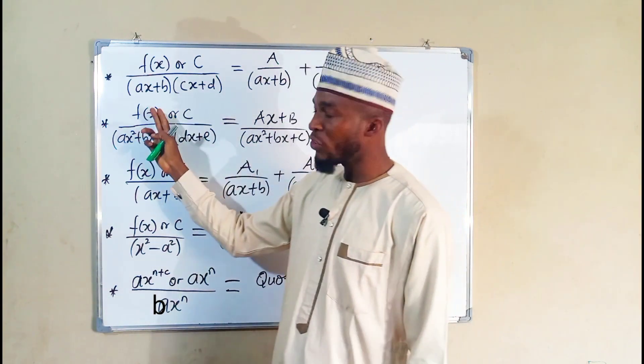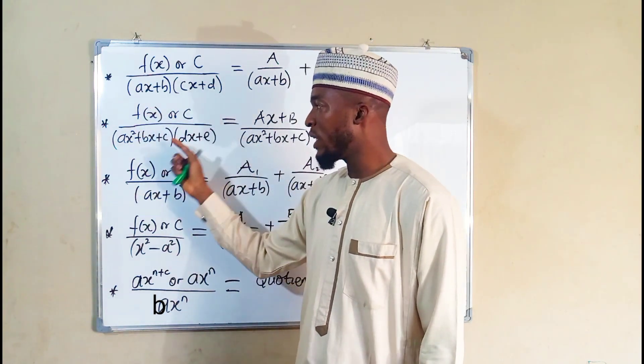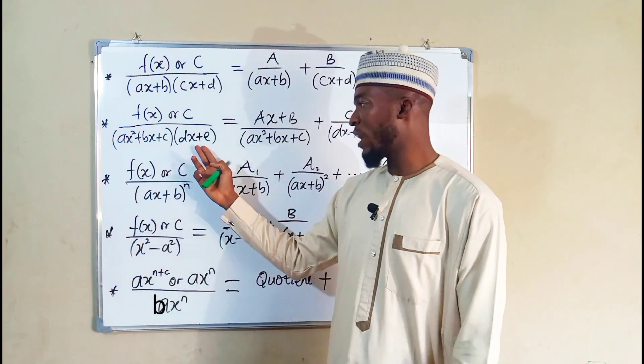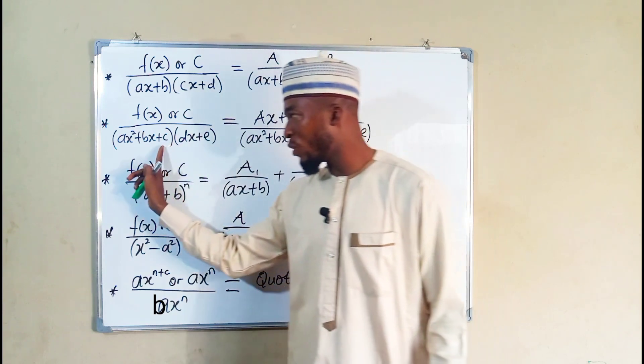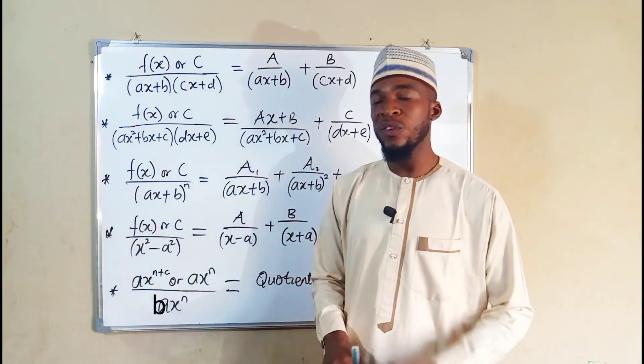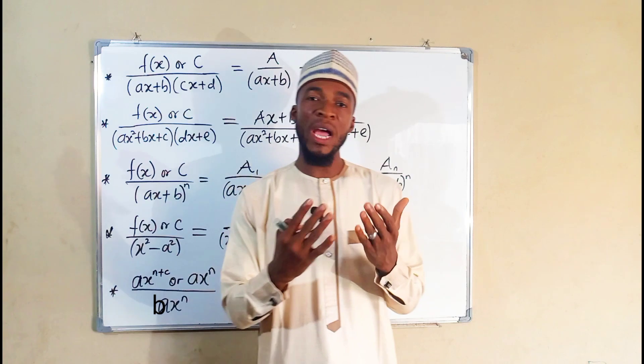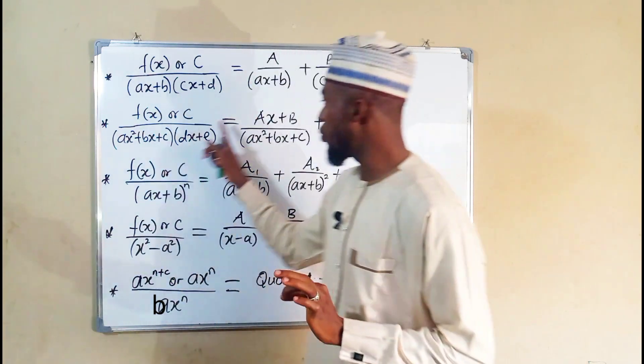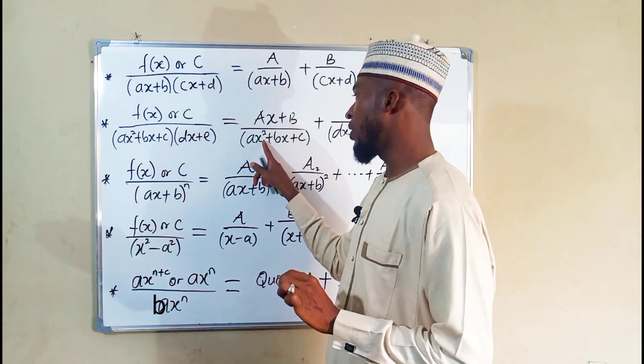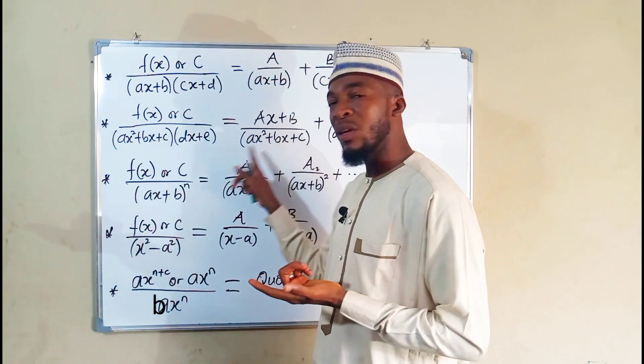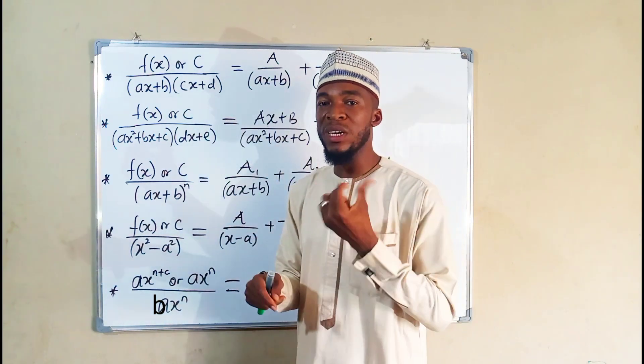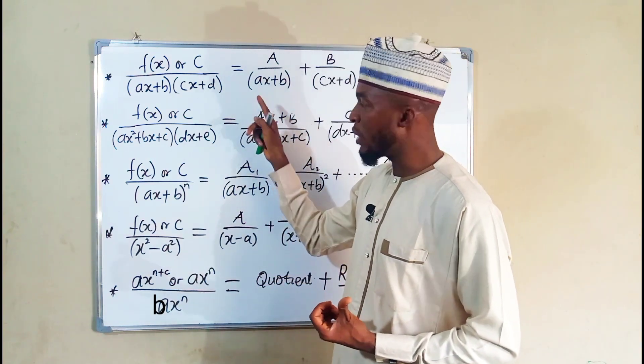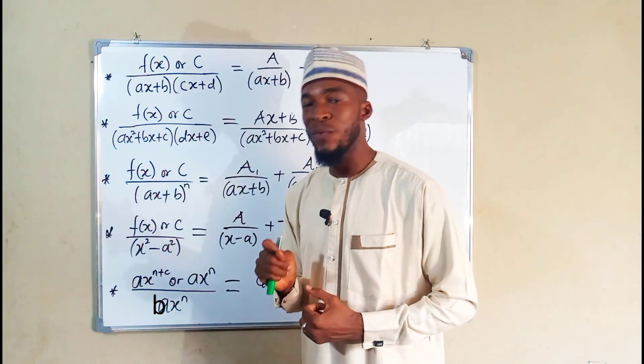Sometimes we may have a function to the top or a constant divided by a quadratic factor. I just attached this one, but our main target is on this. When we have a quadratic factor, first of all, we have to try as much as we can to factorize it. If it cannot be factorized, this is the general form. You know the highest degree here is 2. Definitely the numerator is going to be of degree 1 less than the denominator and hence we have a linear polynomial to the top divided by that quadratic factor.